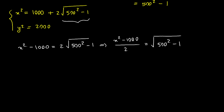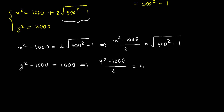Let's do the same thing to the second equation so we can compare both sides. Subtracting 1000 and then dividing both sides by two gives us: y squared minus 1000 divided by two equals 500. Notice that we can replace 500 with the square root of 500 squared.